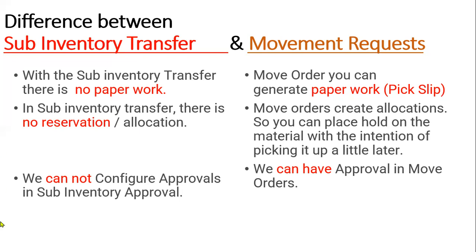In a movement request, when you create a move order, allocations happen internally — the system allocates the material so you can place a hold on it with the intention of moving it later. It means you can hold the goods now and transfer them later. Additionally, in movement requests we can configure approvals as a pre-approval process, whereas in sub-inventory transfer we cannot configure approvals. That is the major difference between sub-inventory transfer and movement request. In the next session, I will show you how to create a movement request and move goods from one sub-inventory to another. Thank you.